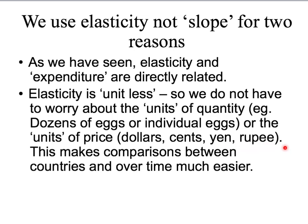Elasticity is the answer. If you're looking at the own price elasticity of the demand for eggs and your price is in dollars, yen, or rupees, it doesn't matter — because you're looking at the percentage change in price. So using elasticity rather than slope allows us to make comparisons between countries and also over time in a way that using the slope of the demand curve just cannot do.